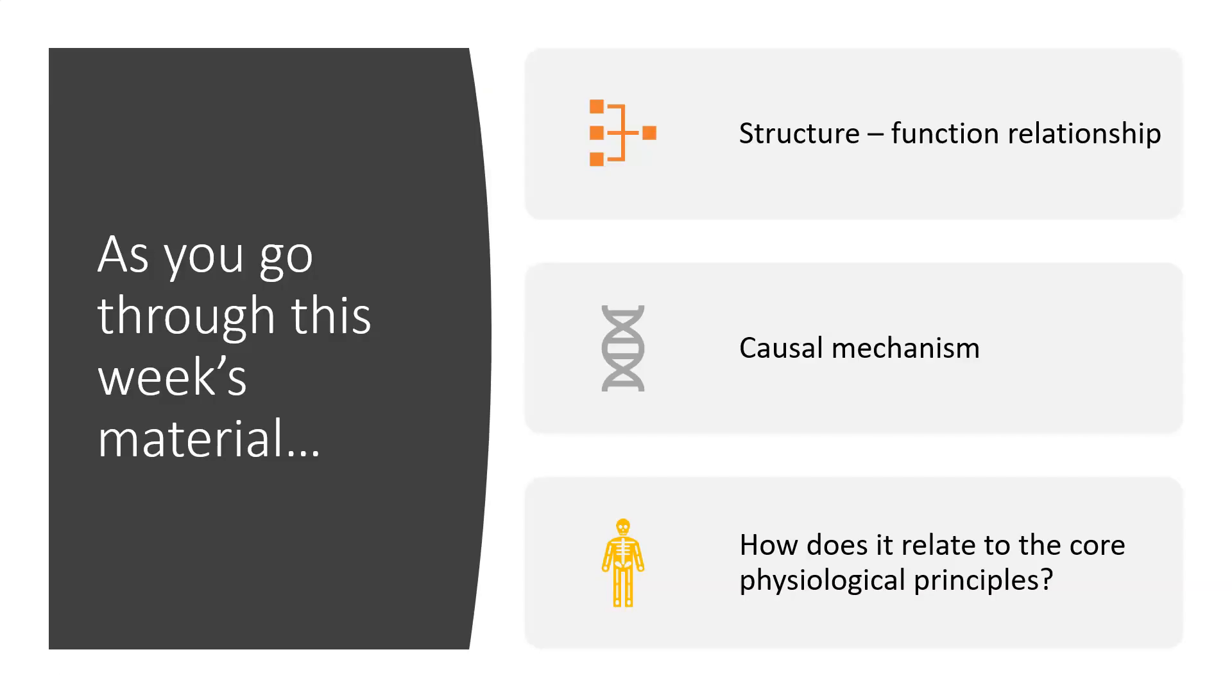So as you go through this week's material, I wanted to emphasize certain points to focus on. The first is structure and function relationships. So like we said before, all of these different neurons that are involved in producing movements are arranged in certain fashions. So go ahead and pay attention to that. Secondly, pay attention to the causal mechanism behind producing these reflexes or these voluntary movements. As always, always relate these phenomena back to those core physiological principles. With that, you're ready to learn about reflexes and voluntary movement.